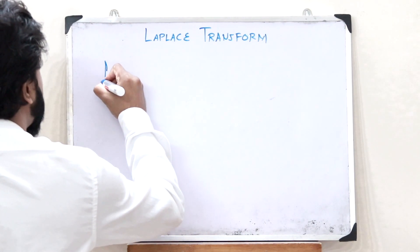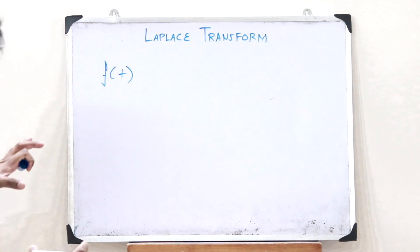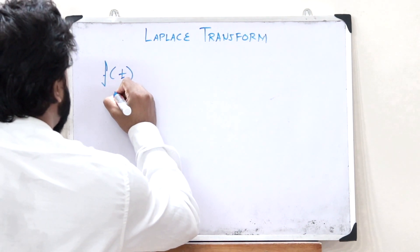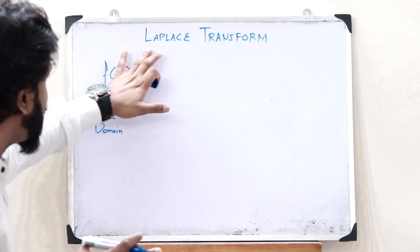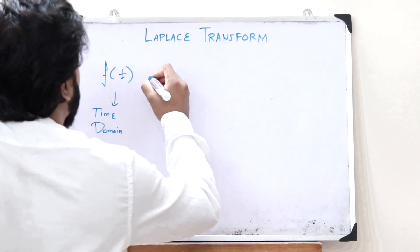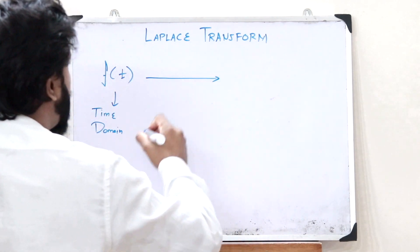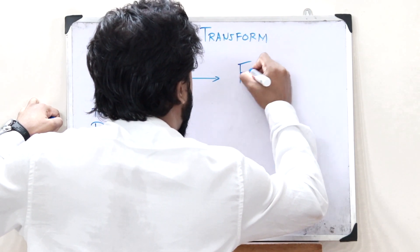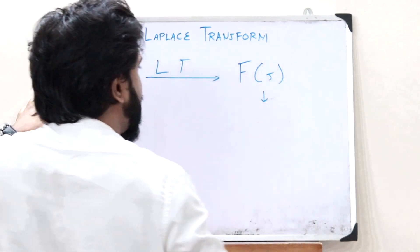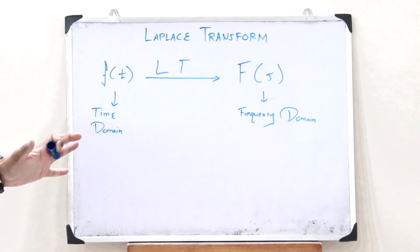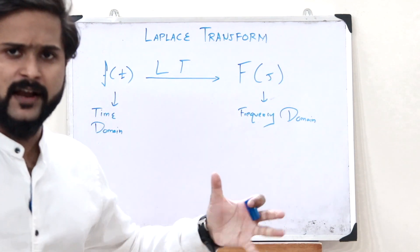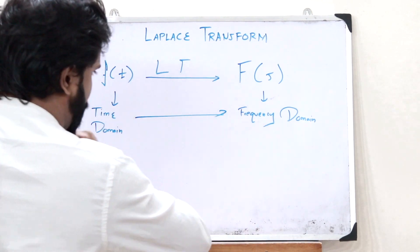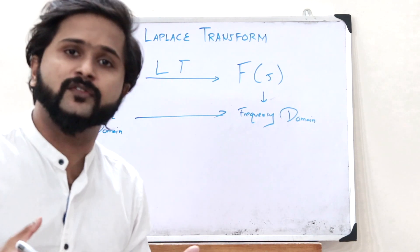Let us consider a particular function f of t. When we say we have a particular function f of t, this function is said to be in the time domain. What a Laplace Transform does is convert this particular function from the time domain to the frequency domain, and therefore we obtain F of S. This F of S is in the frequency domain — this is why we use a Laplace Transform.